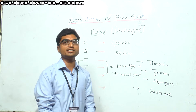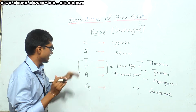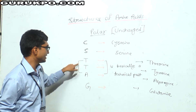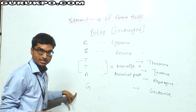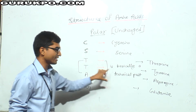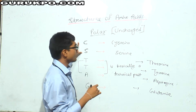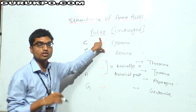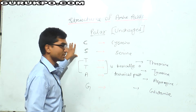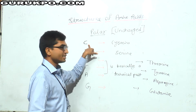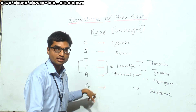There is a trick from which we can easily learn how many types of polar uncharged amino acids there are. This trick is CSTTAG — Chanchal Singh TTAG, where TTA is a technical post. CSTTAG stands for: cysteine, serine, threonine, tyrosine, asparagine, and glutamine.